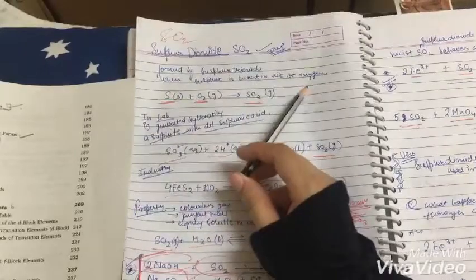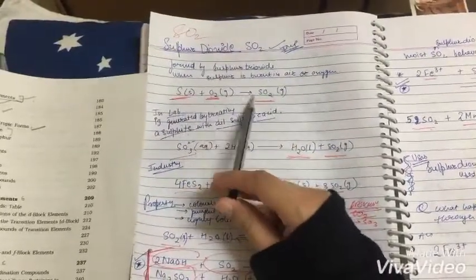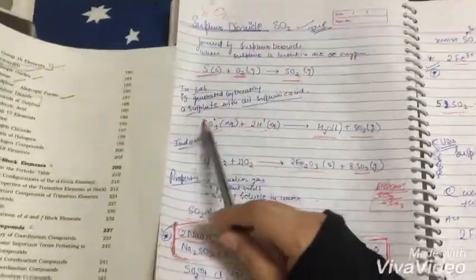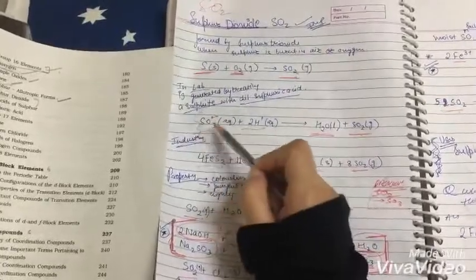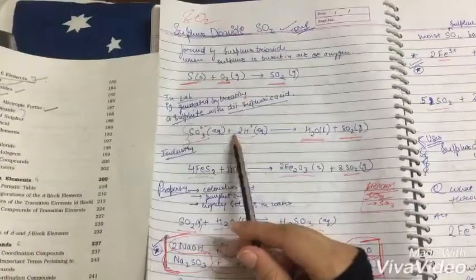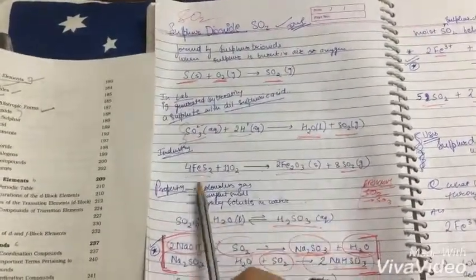Sulfur dioxide is formed by sulfur trioxide when sulfur is burned in air or oxygen: S plus O2 gives us SO2. In lab, it's generated by sulfite plus H plus gives H2O and SO2. In industry, FeS2 plus O2 gives us Fe2O3 plus SO2.